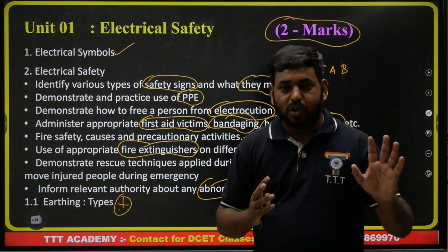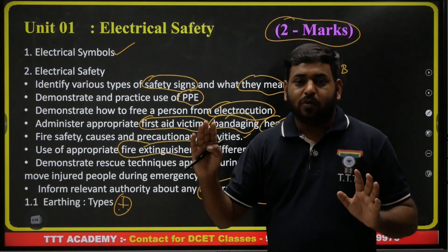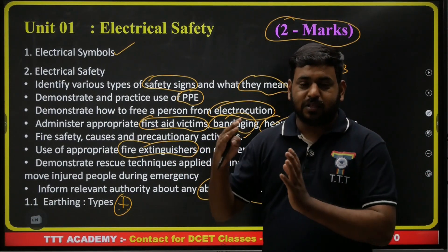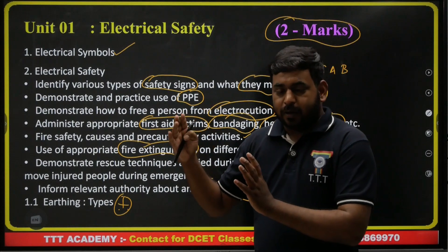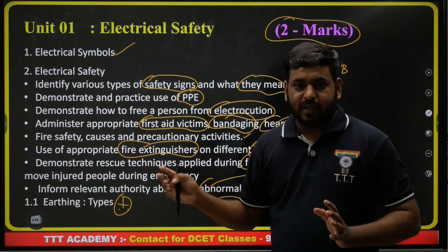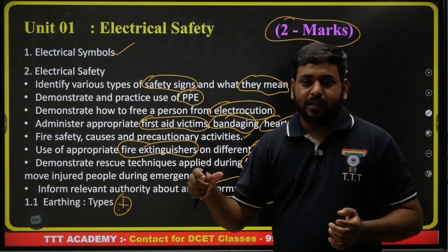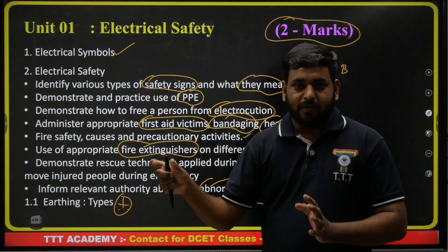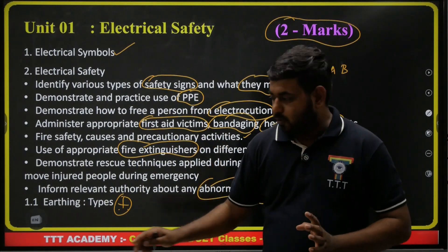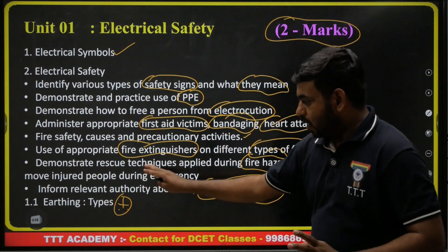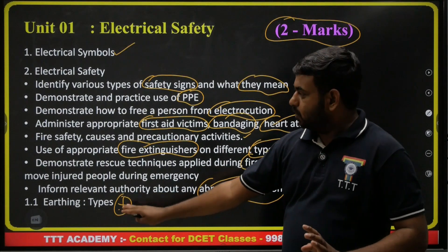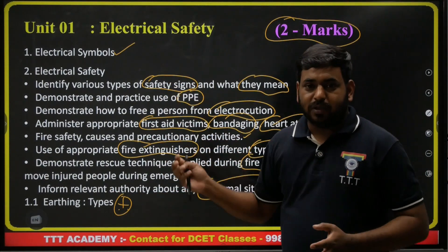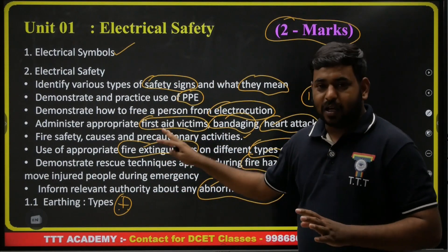There are different types of earthing. The main types are neutral earthing and equipment earthing. Equipment earthing has further sub-types: pipe earthing, plate earthing, and strip earthing. Important exam questions come from fire extinguishers and earthing topics.